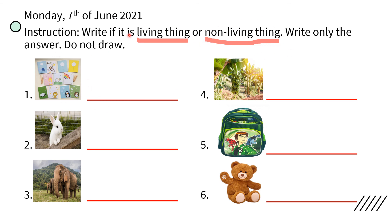Number one: notebook — is it a living thing or a non-living thing? Write your answer. Number two: rabbit. Number three: elephant — write your answer. Number four: banana — living thing or non-living thing? Next: bag, backpack — is it a living thing or a non-living thing? Next: teddy bear — is it a living thing or a non-living thing? Write your answer in the blanks here on the red line. Enjoy answering!